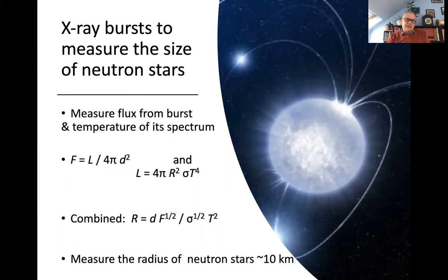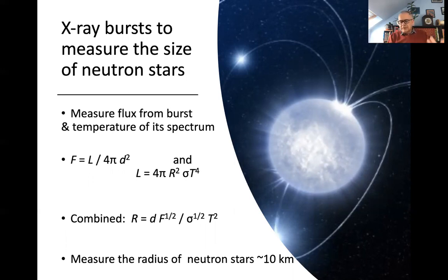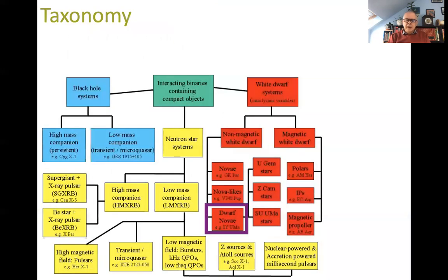One useful thing about X-ray bursts is that they allow us to measure the size of neutron stars. If we measure the flux — the amount of light in watts per square metre — from a burst, and we measure the temperature of the X-ray spectrum, we can combine those quantities to work out the radius of the neutron star. The radius depends on the distance to the system, the measured flux from the burst, the Stefan-Boltzmann constant sigma, and the spectrum temperature. From measurements like this we can confirm that neutron star radii are of order 10 kilometres.